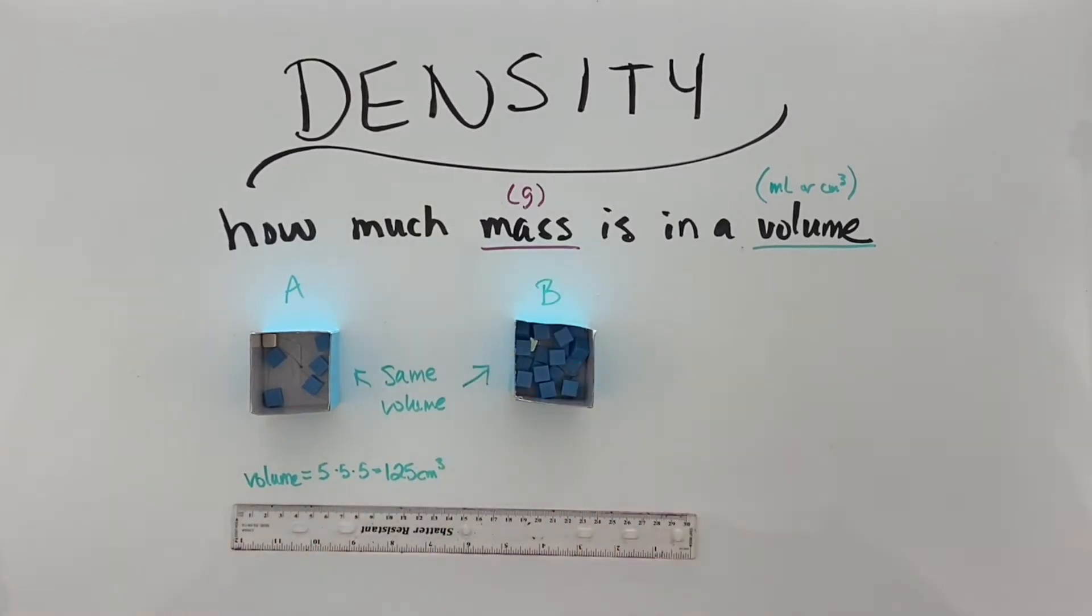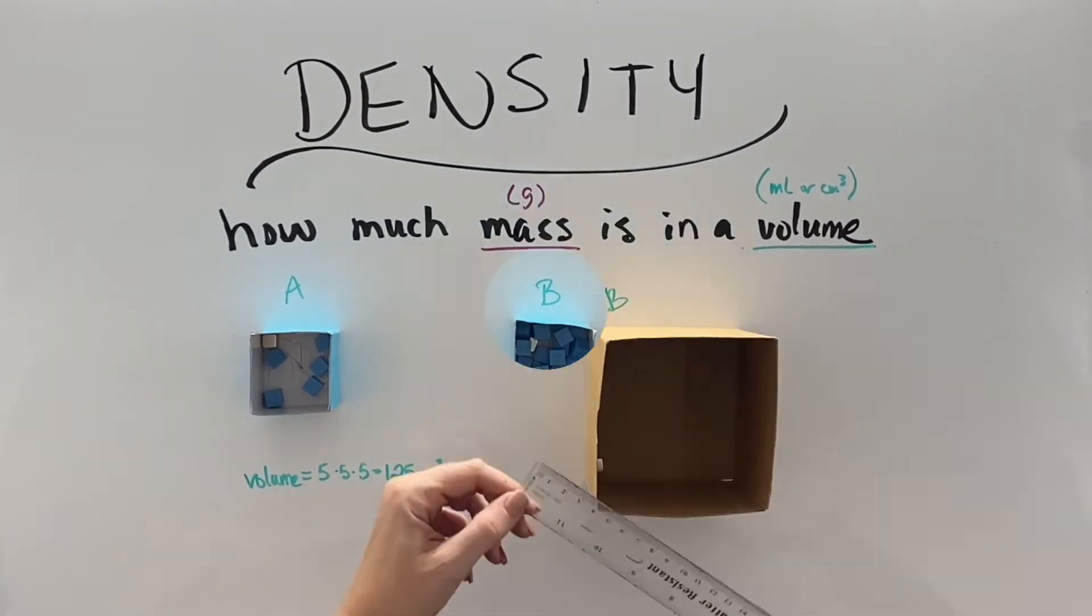If I put a whole lot more mass in box B, now box B has more mass in that same space, therefore it is more dense.